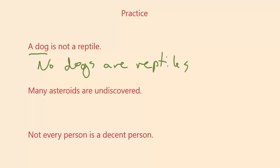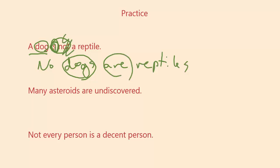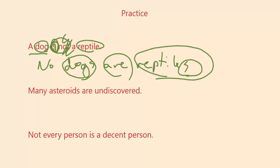We need to realize we're conveying the very same information as an E statement. It was also important to go from the singular 'dog' to the plural 'dogs,' and to go from the copula 'is not' to the copula 'are.' Whatever your noun is for the predicate must also be plural — as opposed to the singular 'reptile,' we get the plural 'reptiles,' or 'animals that are reptiles.'